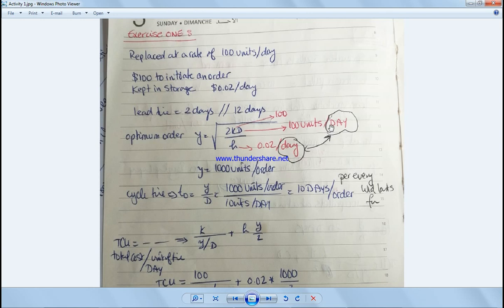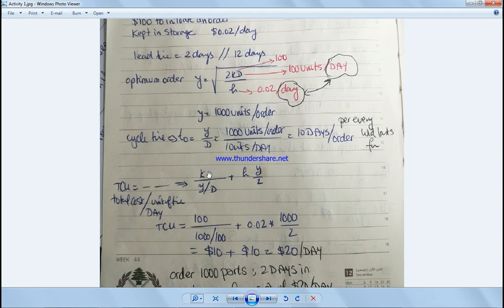So y equals 1000 per order. The cycle time is the amount of time needed to consume the amount ordered, which is y over D. So it's 10 days - every order would last for 10 days.